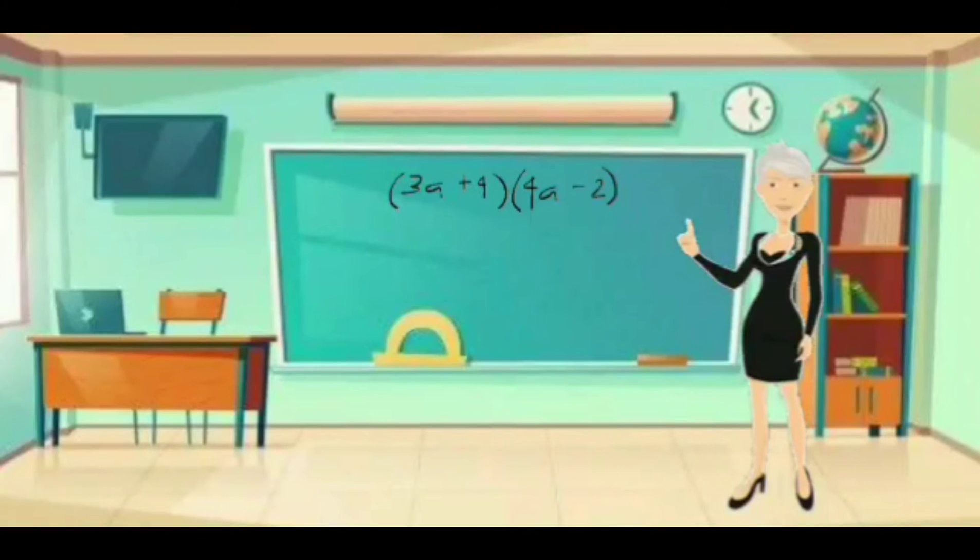Let us try this a bit complex equation, 3a plus 4 times 4a minus 2. In applying FOIL method, we have to multiply first the first terms, which is 3a times 4a. By doing so, we will get 12a squared.